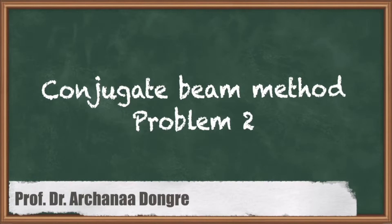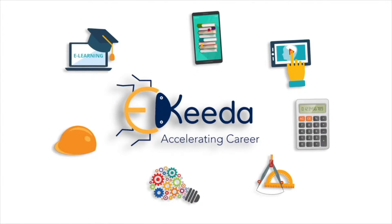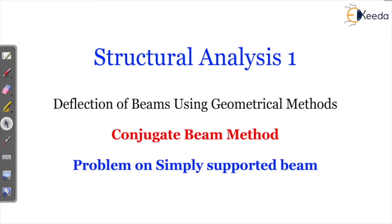Hello students. We are going to solve one numerical on a simply supported beam. The main purpose of the conjugate beam method is that it is useful when EI is changing. So now we are going to solve a question for a simply supported beam where I is not constant. Let's see the question.